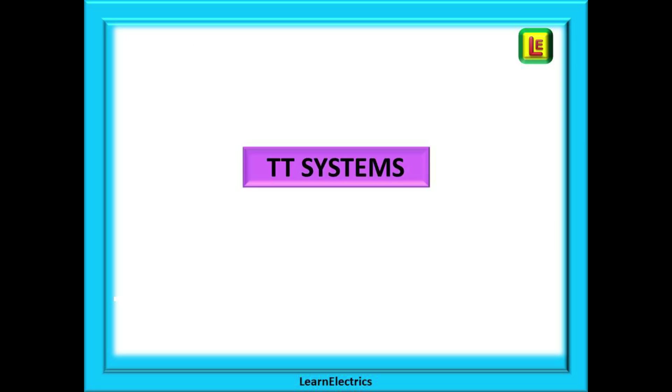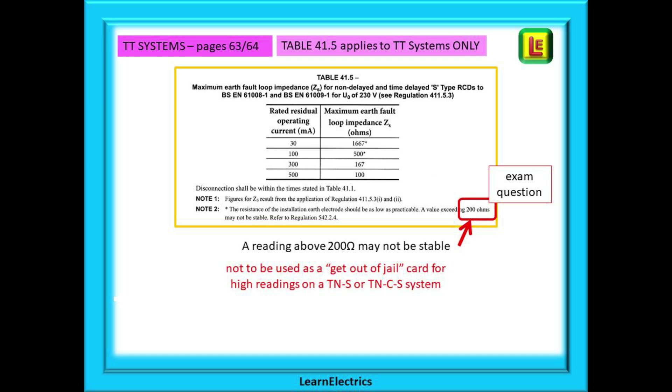A brief mention of TT systems. These will be found on pages 63 and 64. Table 41.5 often comes up as an exam question. This table is to be used to determine the maximum ZS for a TT system with RCD protection. It applies to TT systems only and it is not to be used as a get-out-of-jail card for high readings in TNS or TNCS systems. You need to be professional and fix the problem. Especially note the little red box at the bottom right. Another exam question: readings above 200 ohms may be unstable.